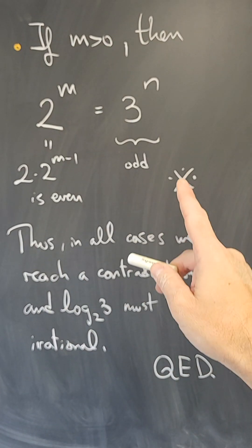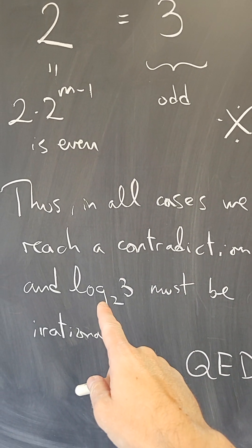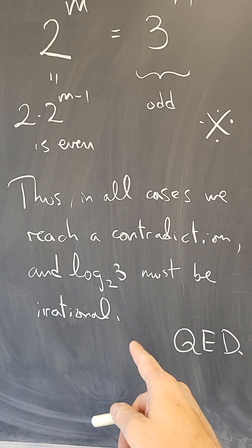Therefore, in all cases we've seen, we reach a contradiction, and we conclude that log base 2 of 3 must be irrational.